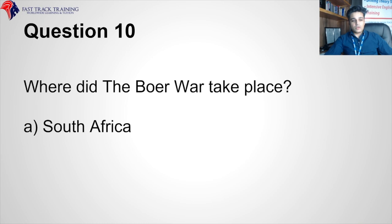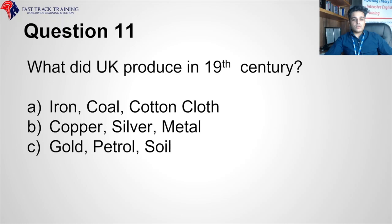What did the UK produce in the 19th century? Iron, coal, cotton, cloth — or copper, silver, metal — or gold, petrol, soil? The correct answer is iron, coal, cotton, cloth.